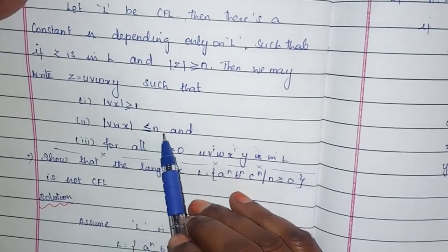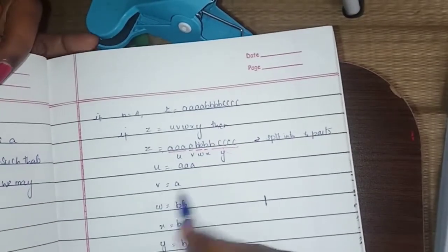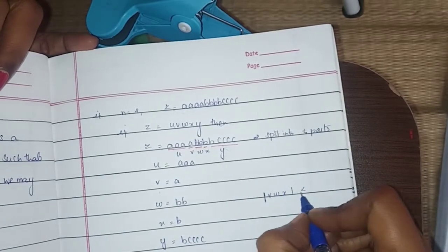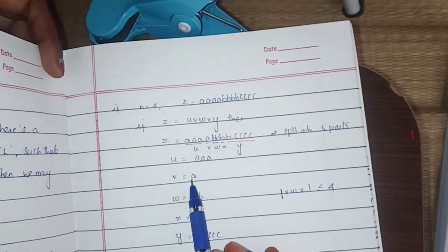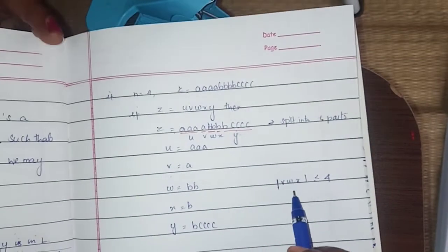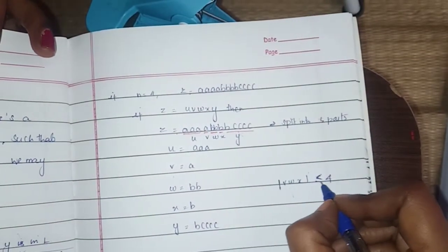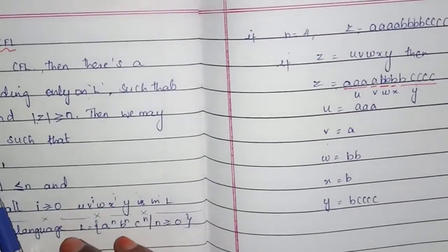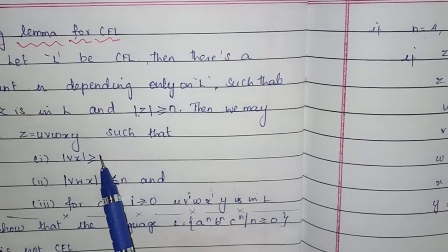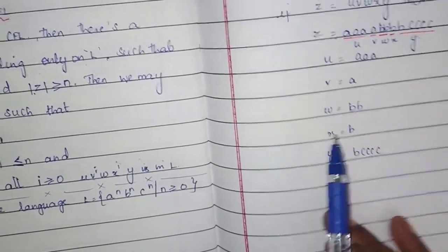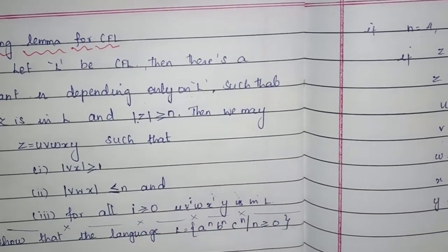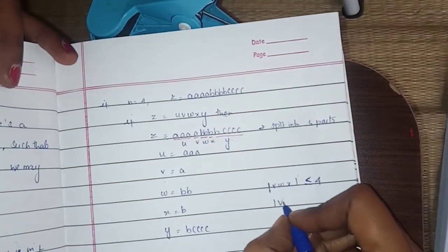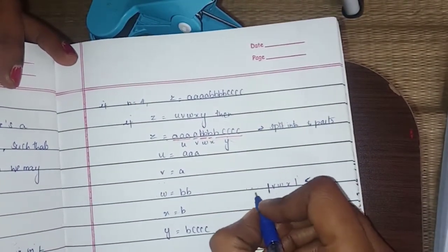Now checking the conditions: the mod of VWX is less than or equal to N, where N is 4. My VWX is A, B, B — that satisfies the second condition. Also, mod of VX is greater than or equal to 1: V is A and X is B, so that condition is also satisfied.